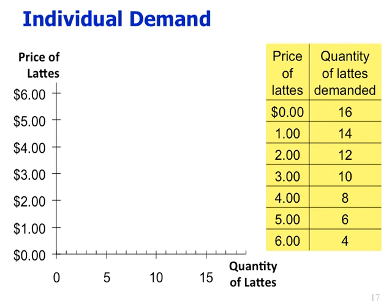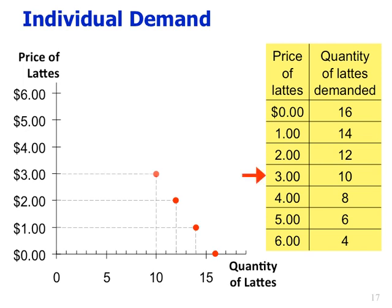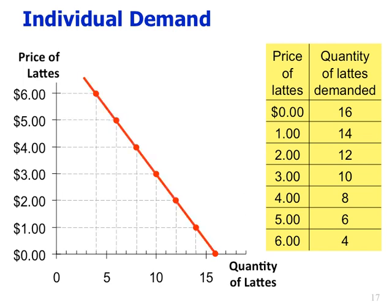Here's an example of individual demand for lattes. On the right we have the demand schedule — for any given price, the quantity of lattes demanded. Even if lattes are free, this person can't possibly consume more than 16 per week. At $1, they'd consume 14; at $2, 12; at $3, 10; at $4, 8; and so on. Plotting those points and connecting them gives us the individual demand curve on the left. We've gone from the demand schedule to the individual demand curve.